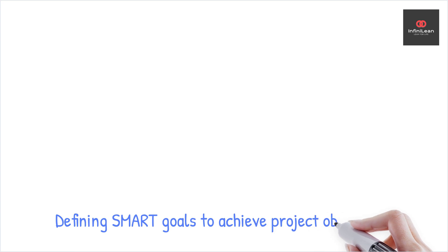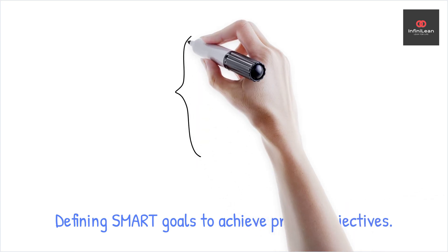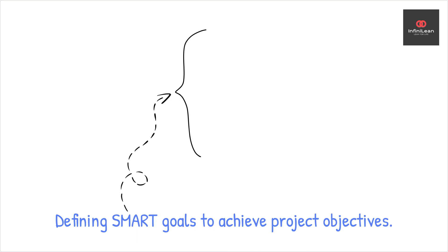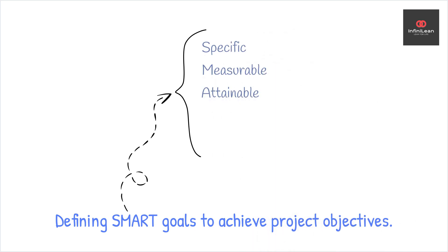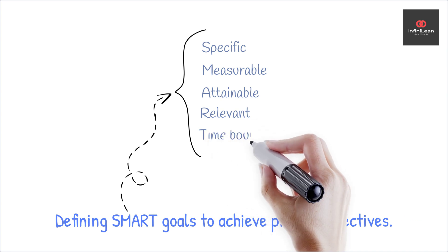Next, define the project's goals. What are you hoping to achieve? This could be anything from reducing cycle time to improving product quality. Make sure your objectives are specific, measurable, attainable, relevant, and time-bound, often called SMART goals.